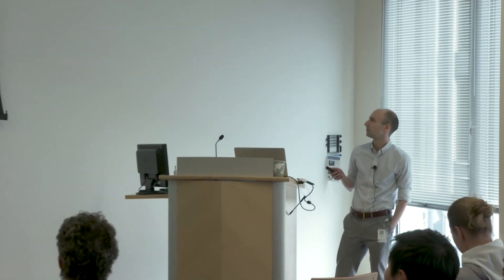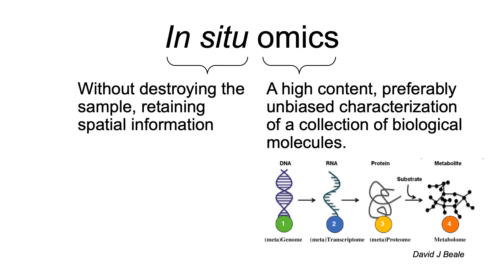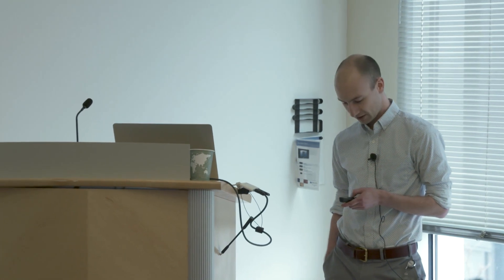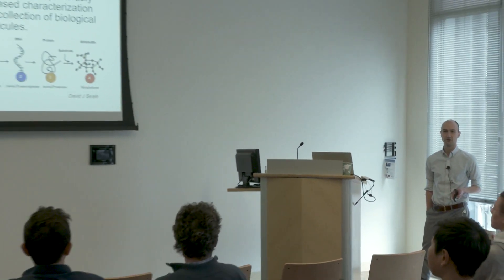It's important to define your terminology. Omics is very popular in the broad — these are high content, preferably unbiased characterizations of a collection of biological molecules. We've done genomics for many years. We're now doing transcriptomics and proteomics all the time, and metabolomics in many groups throughout the institute. What we're adding on now is the in situ aspect, which means without destroying the sample and retaining the spatial information.